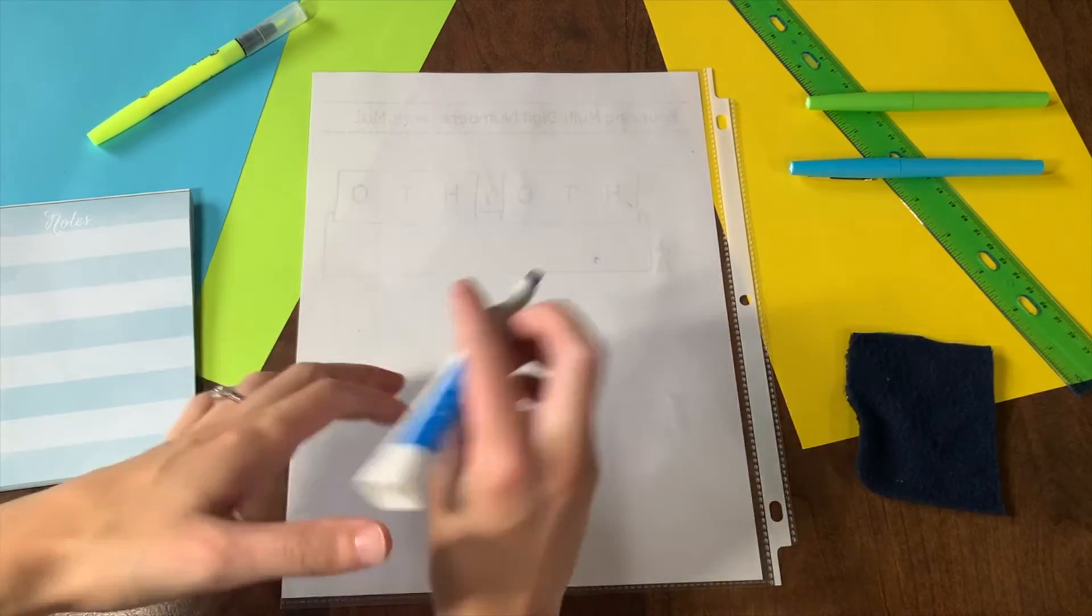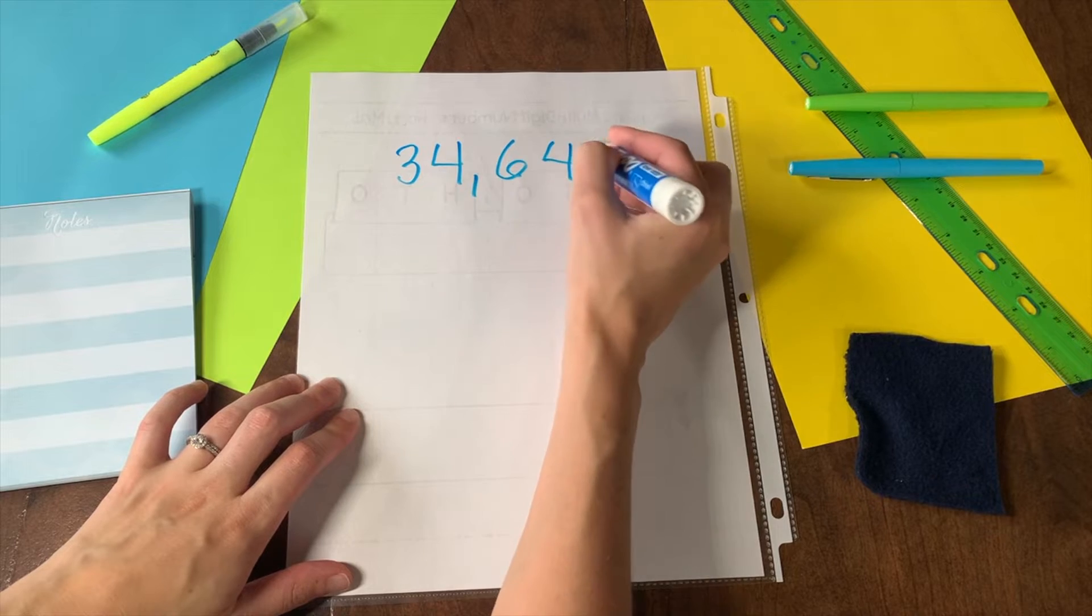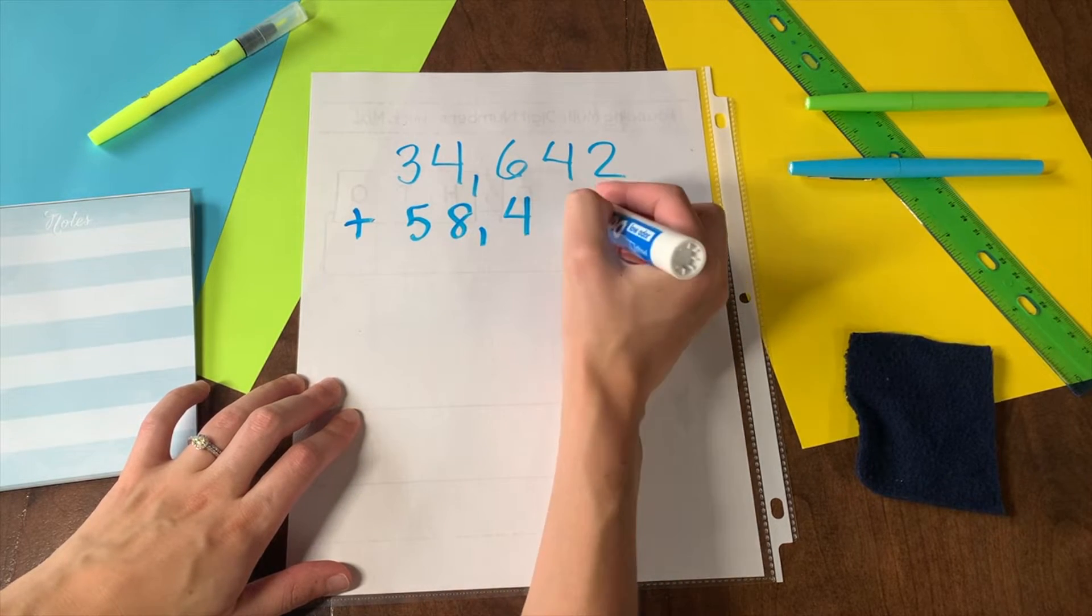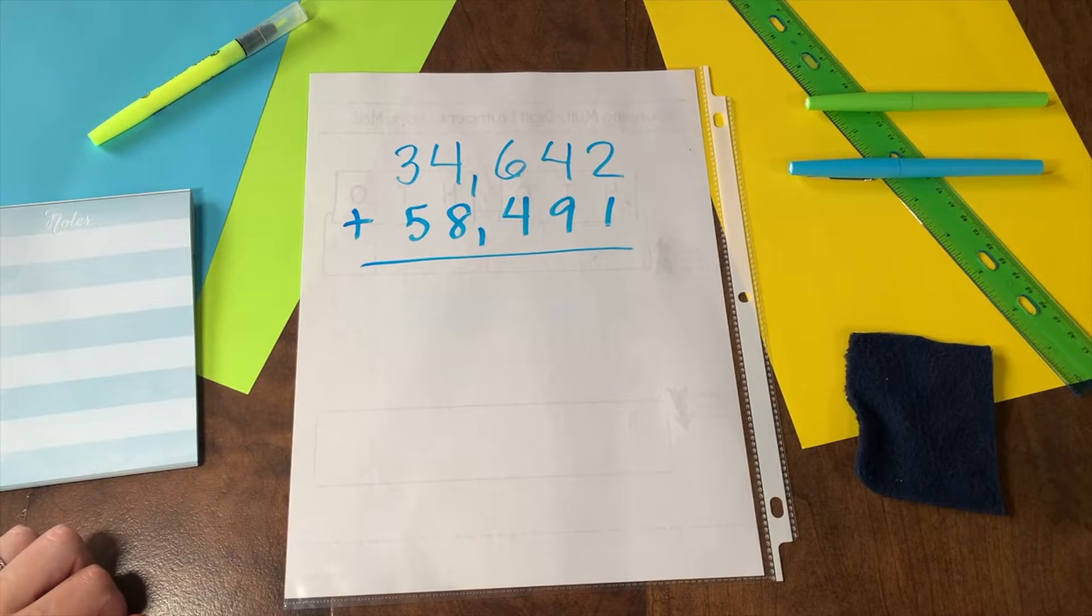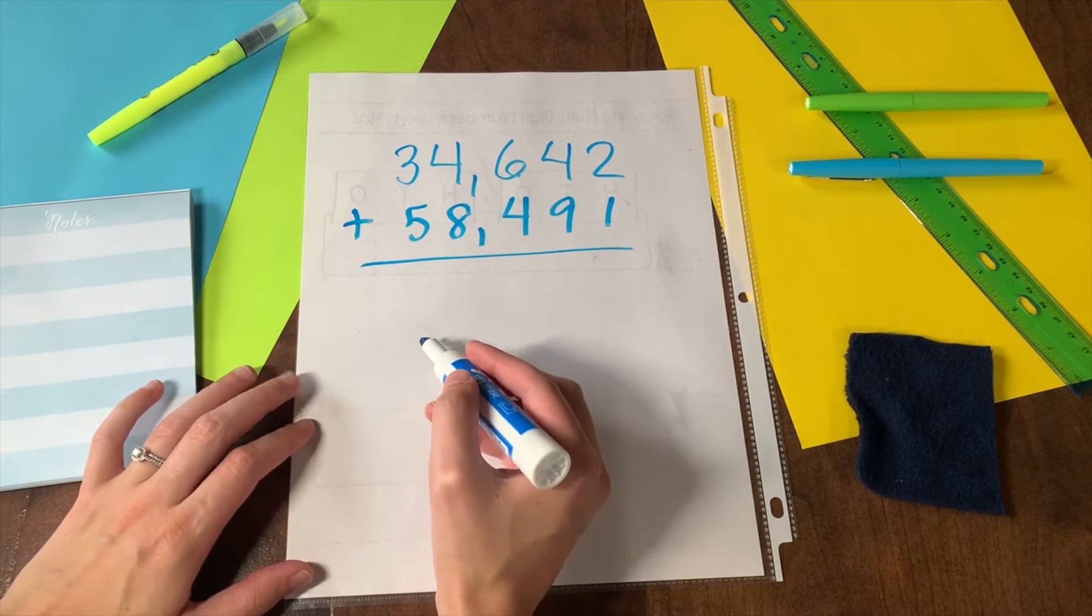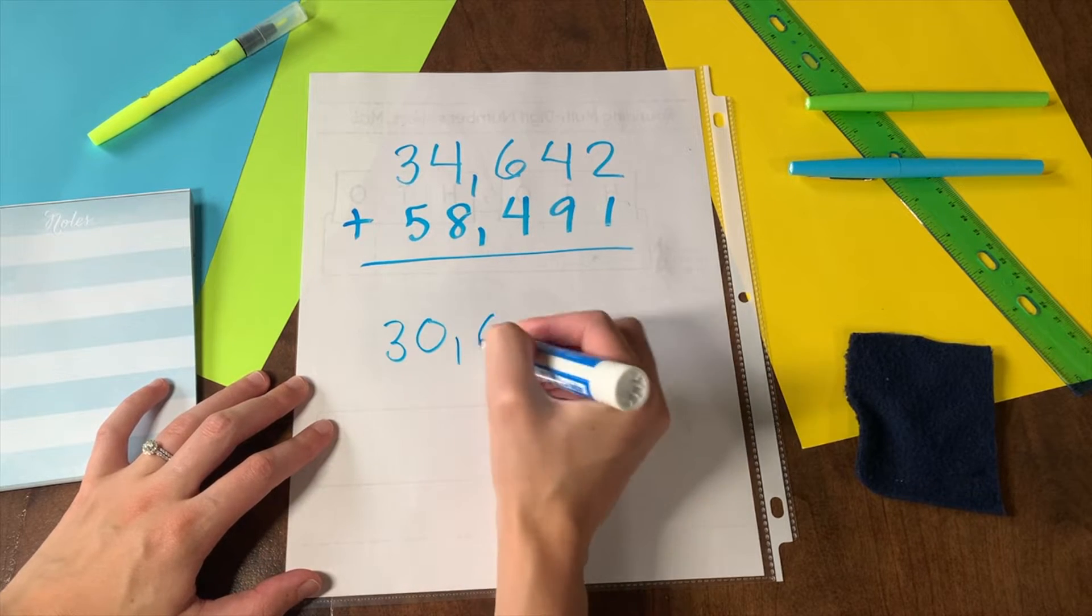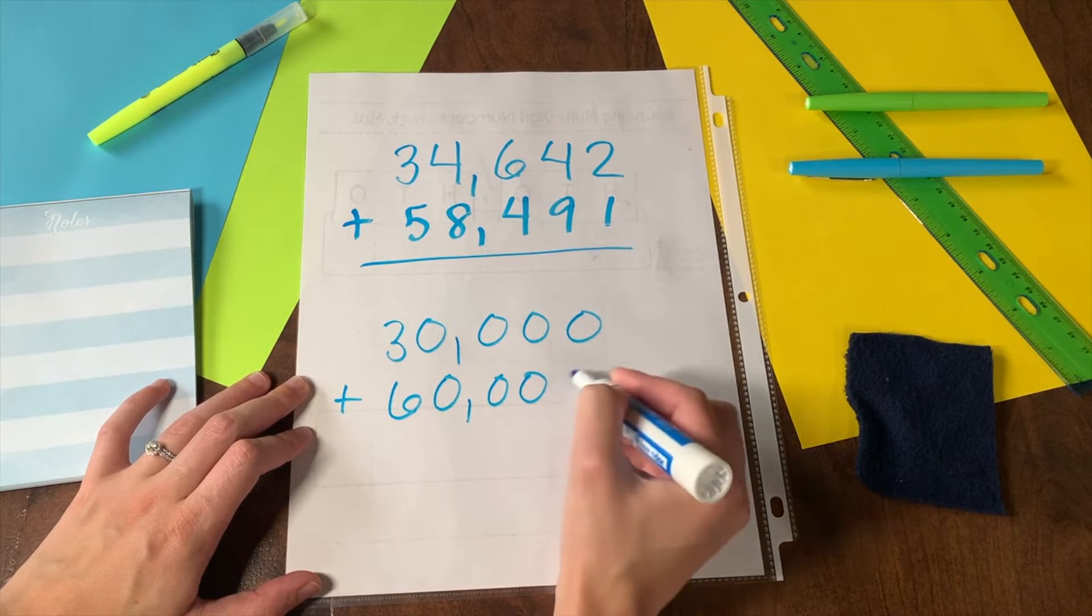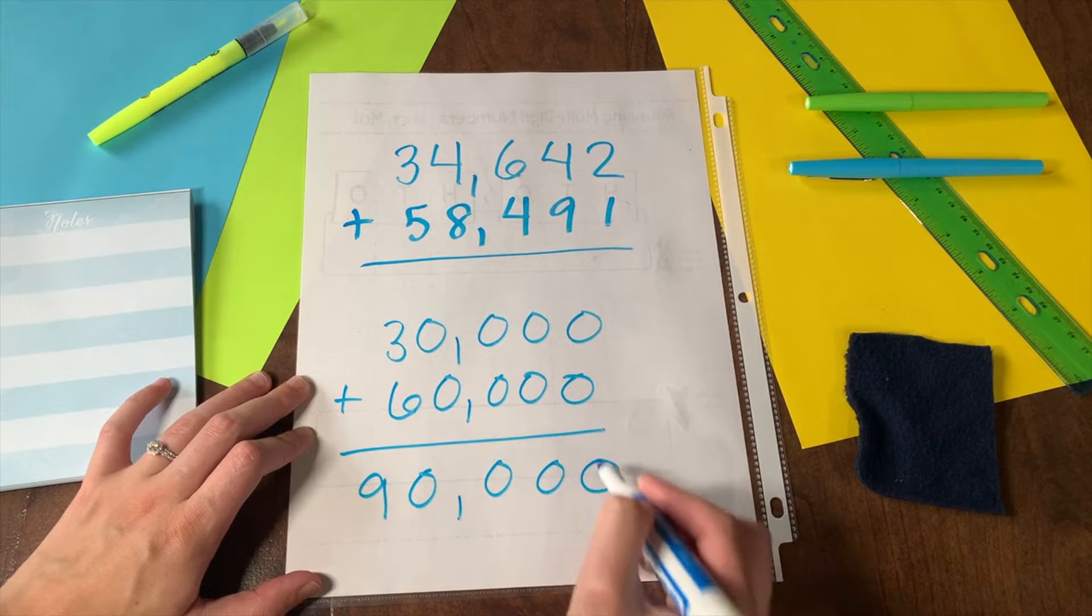For example, if we add 34,642 plus 58,491, it would take a lot of effort to add each number. Instead, if we round to the nearest 10,000, we could add 30,000 plus 60,000 and quickly find an estimated answer to be 90,000.